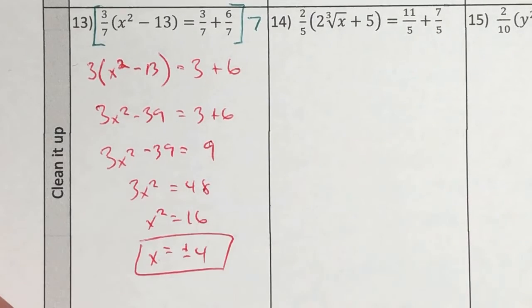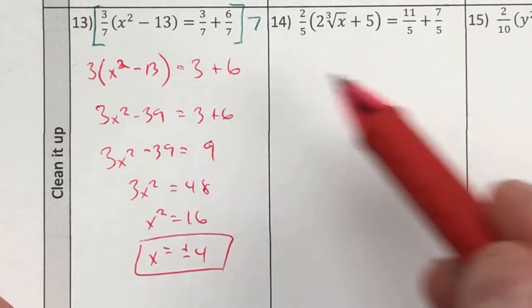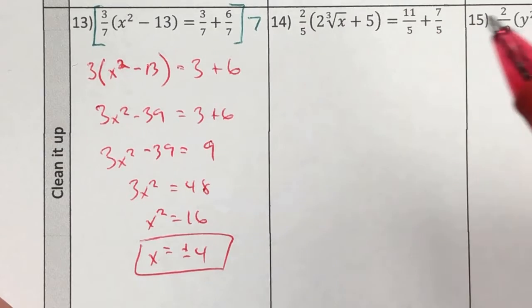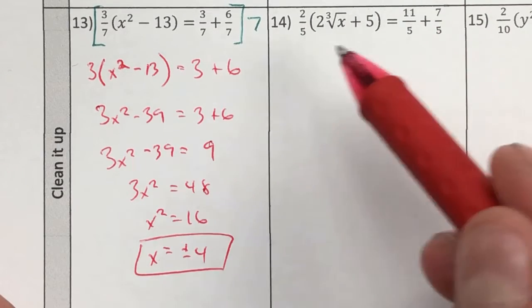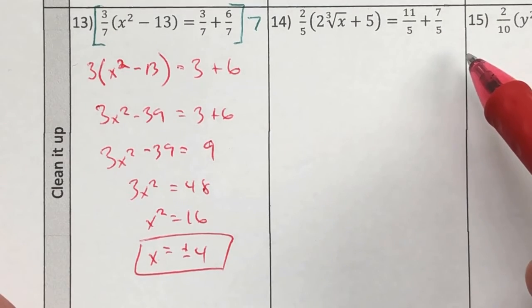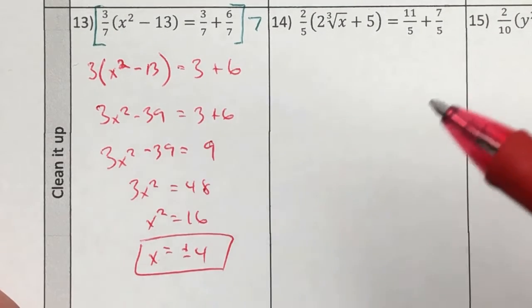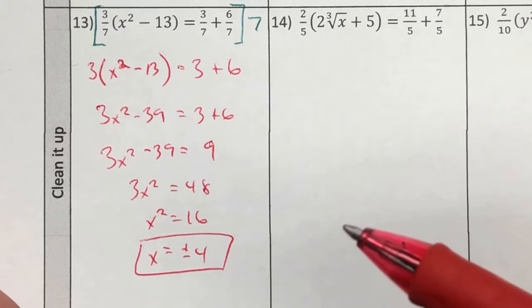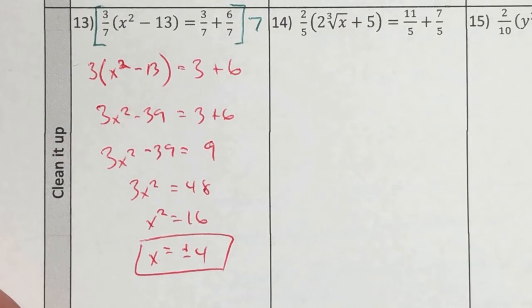So why don't you go ahead and try number 14 real quick? Go ahead and apply those same three steps. Get rid of the fractions. Distribute to get rid of the parentheses. And then combine any like terms that you happen to see before moving the term, clearing the coefficient, and clearing the index. Unpause it when you're done and see all you did.